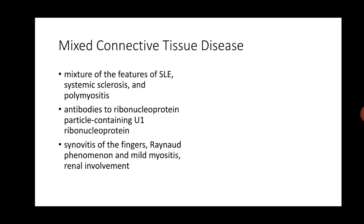Sometimes connective tissue disorders come as a cluster. Some patients with SLE will also have systemic sclerosis and polymyositis, presenting with mixed symptoms. Such conditions are known as mixed connective tissue disorders. These patients can have anti-nuclear antibodies and antibodies to ribonucleoproteins. They can also present with synovitis of the fingers, Raynaud's phenomenon, myositis and kidney involvement.